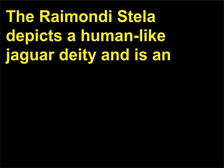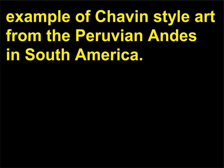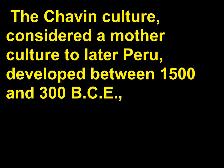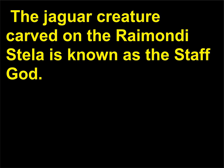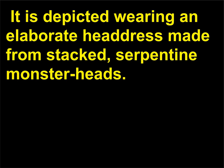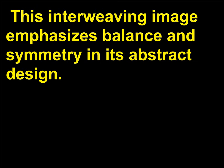What is the Raimondi Stela? The Raimondi Stela depicts a human-like jaguar deity, an example of Chavin style art from the Peruvian Andes in South America. The Chavin culture, considered a mother culture to later Peru, developed between 1500 and 300 BCE, and Chavin style art emphasized complex abstract patterns, featuring animals such as jaguars and eagles. The jaguar creature carved on the Raimondi Stela is known as the Staff God, depicted wearing an elaborate headdress made from stacked serpentine monster heads. This interweaving image emphasizes balance and symmetry in its abstract design.